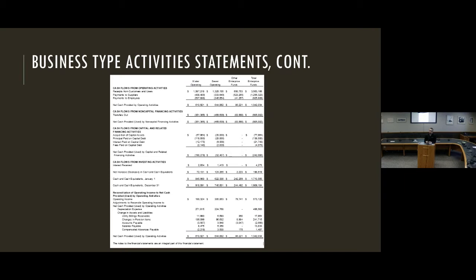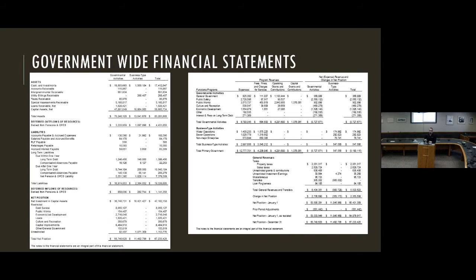Moving on to the cash flow statement — I won't get into this one as much because a lot of our clients don't have to present it. A couple quick spots to look at: about two-thirds down the page you'll see cash and cash equivalents for January 1st and December 31st. Verify those to last year's report as well as the prior slide for December 31st, and make sure it matches up with your cash line item. Cash flows from operating activities — receipts from customers basically equals charges for services from the previous slide, but factors in any changes in receivables. Payments to suppliers factors in any changes to accounts payable.